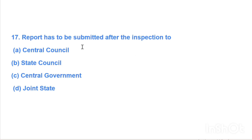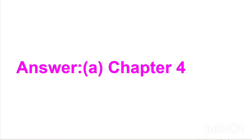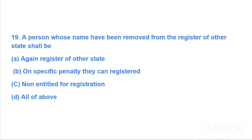Next question: Report has to be submitted after the inspection to — Option A: Central Council, Option B: State Council, Option C: Central Government, Option D: Joint State. After inspection, answer is Option A, Central Council. On specific penalty, Option C: non-entitled for registration. Answer is Option C, non-entitled for registration.